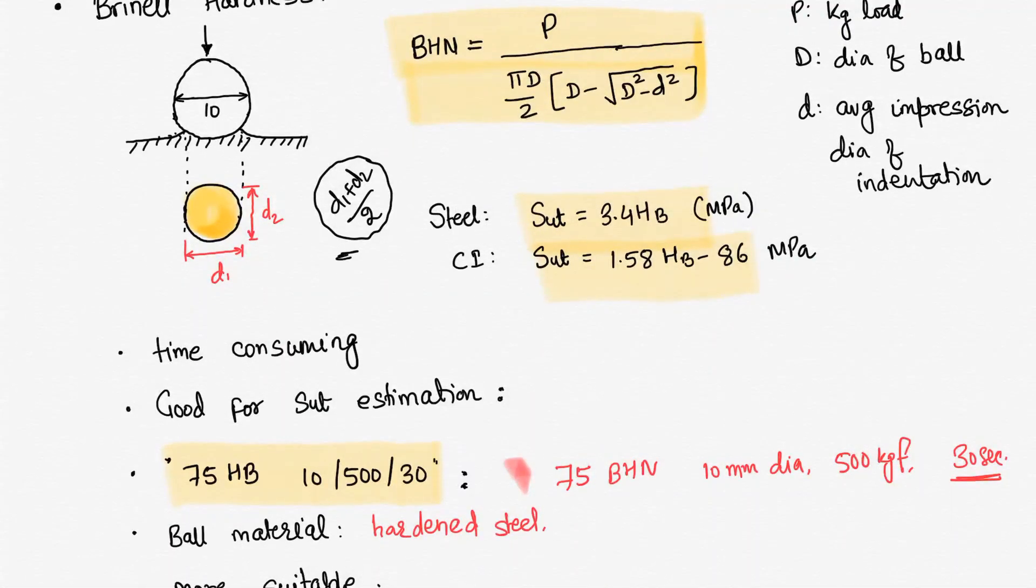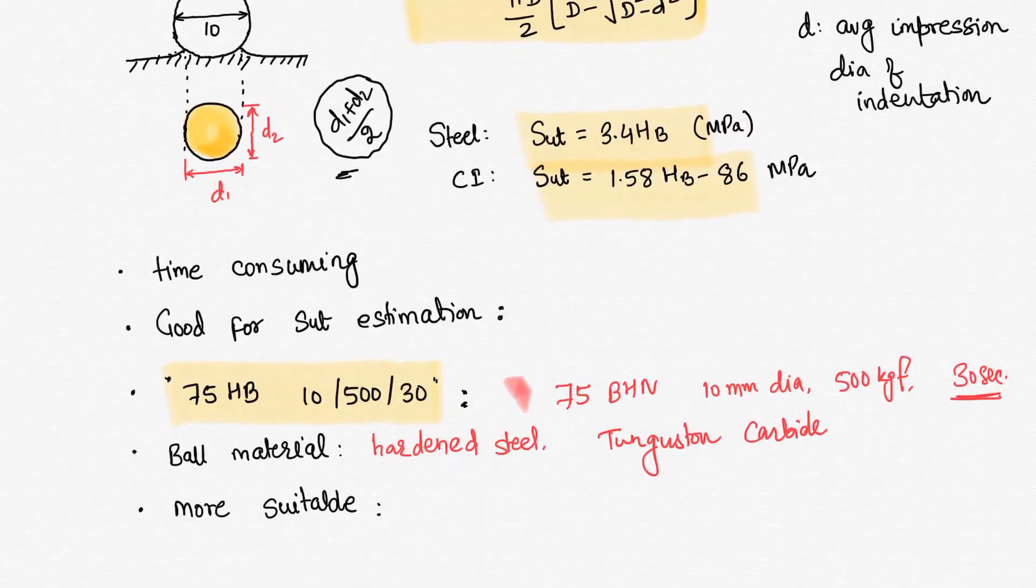Then, if the material that we are testing is very hard, in those cases we use tungsten carbide ball. For hard materials we use tungsten carbide. Otherwise, most frequently used is hardened steel only.